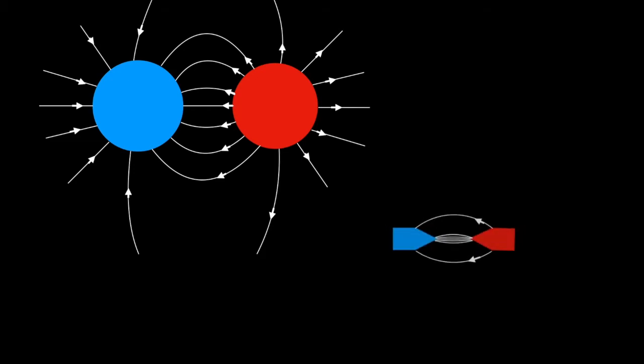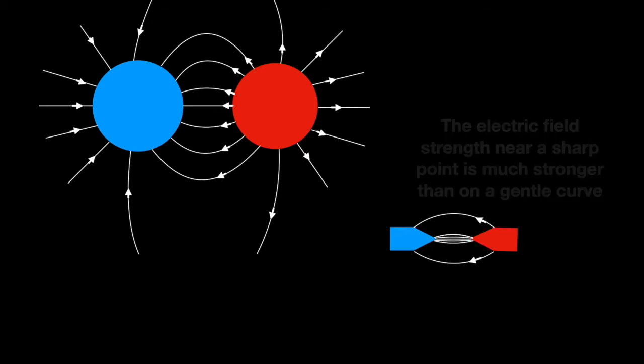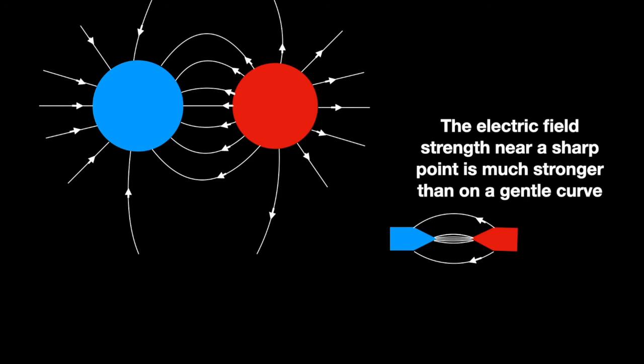If instead of having spheres, we had two shapes like this, with sharp points, the electric field between them would be much stronger — you can see that the lines are much closer together. And with these shapes, you are much more likely to get a spark.